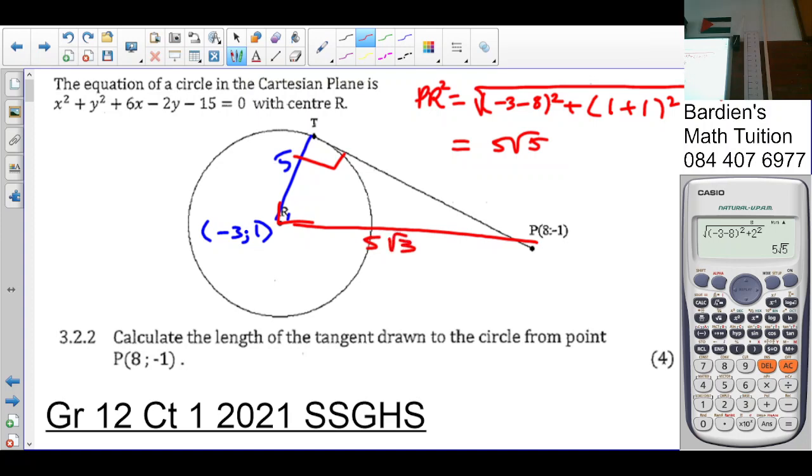So I'm going to calculate TP by using Pythagoras. So TP squared is equal to 5 root 5 squared minus 5 squared. Let's put that in the calculator. So that 5 root 5 squared minus 5 squared, which is 100. The square root of 100 is 10.